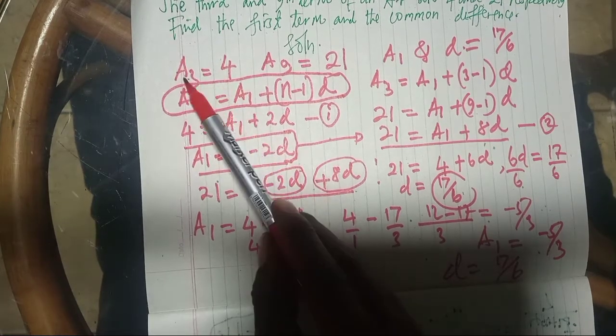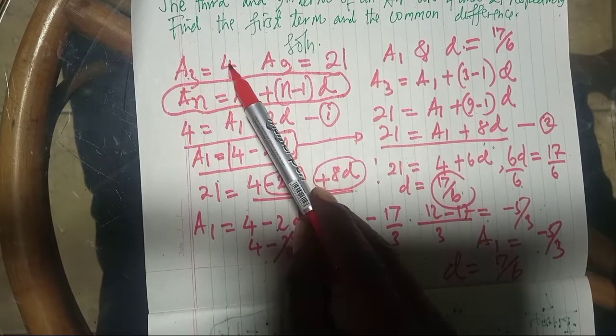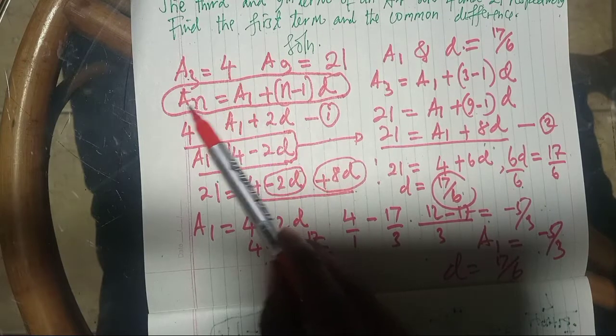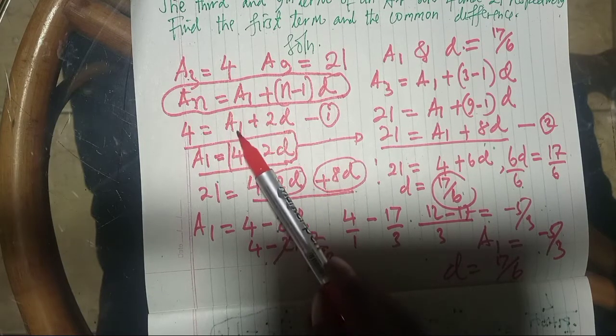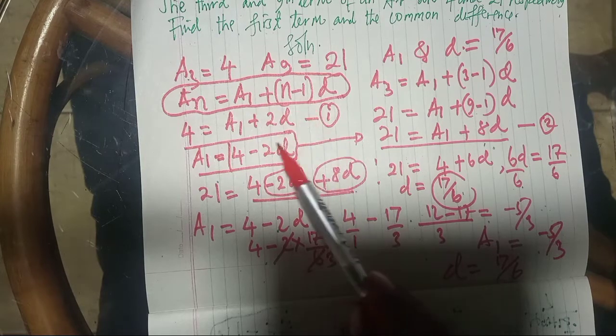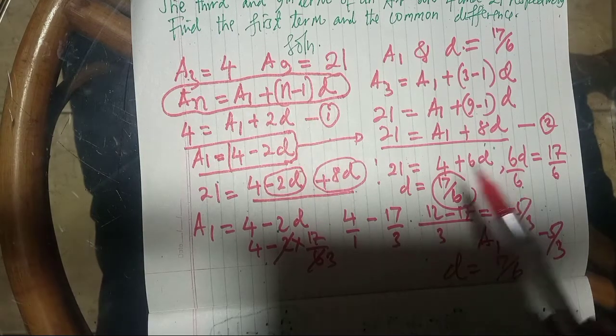For example, A3, that is the third term, equals 4. Now where there is AN you put 4, and therefore it is A1 plus 2, that is 3 minus 1, which is what we have found here.